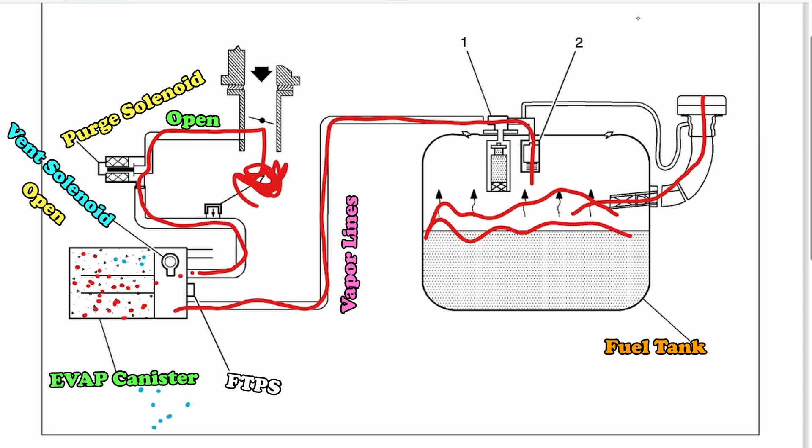When the purge solenoid is opened by the engine computer, hydrocarbons are now sucked into the intake manifold and that gets burned into the engine. Because the vent valve is normally open, fresh air is being drawn into the charcoal canister and that purges the charcoal canister of all the hydrocarbons that have been collected. Therefore, cleaning this whole thing and the process starts over.